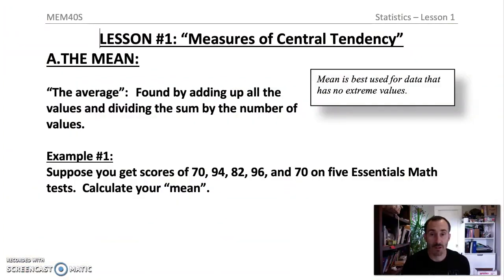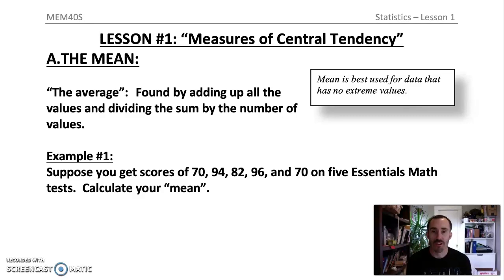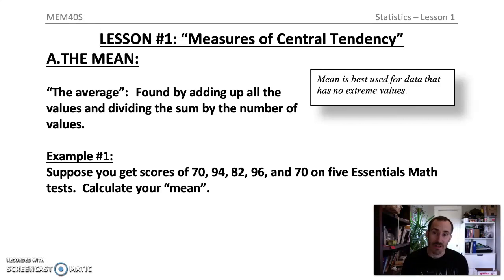In your notes, that thing we just talked about is the first measure of central tendency we're going to discuss. Measure of central tendency sounds complicated, but it really means the search for average or normal. There are different ways to measure what the middle is, and the first one is the mean — what we normally just call average. To find it, you add up all of your data and divide by how many data points you have.